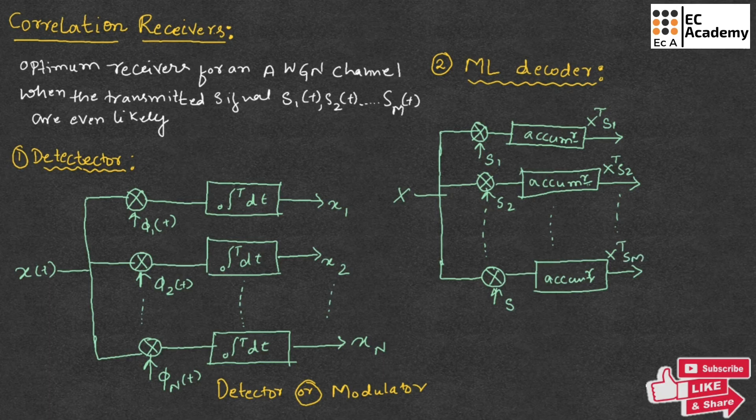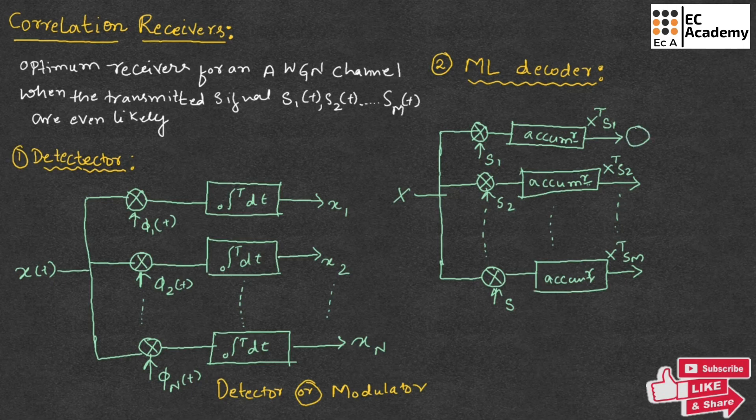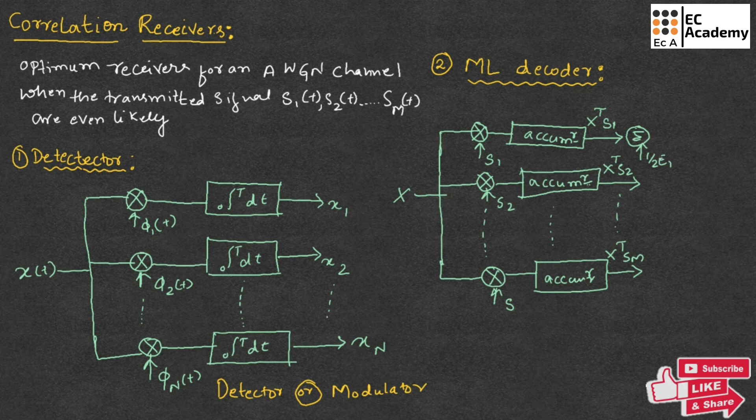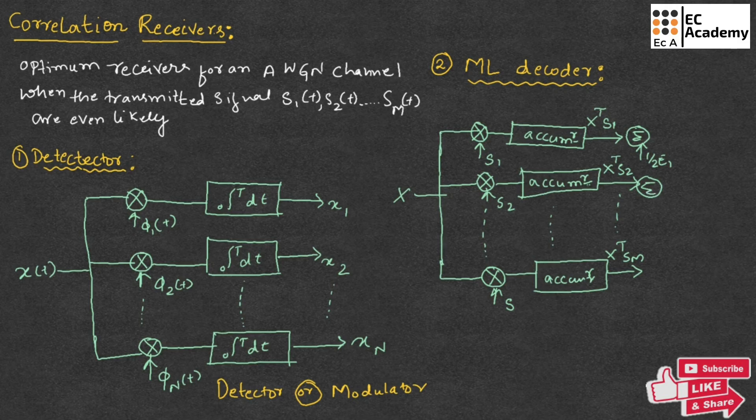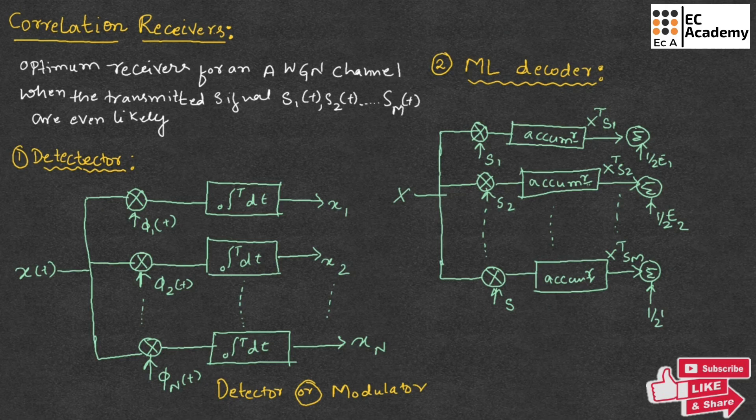These inner products are corrected for the fact that the transmitted signal energies may be unequal. So that's why we will use a summation symbol and we will take that value as 1 by 2 E1. Likewise, for all the inner product we will take the summation of 1 by 2 energy signal value. So finally, here it will be 1 by 2 E E N.